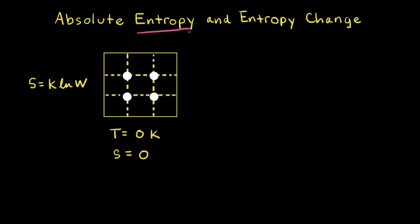Entropy can be measured on an absolute scale, which means there is a point of zero entropy. That point is reached for a pure crystalline substance when the temperature is equal to zero Kelvin, or absolute zero. At zero Kelvin, the entropy of the pure crystalline substance, S, is equal to zero.